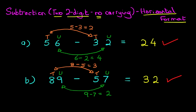So that is subtraction of two 2-digit numbers, no carrying, using the horizontal format.